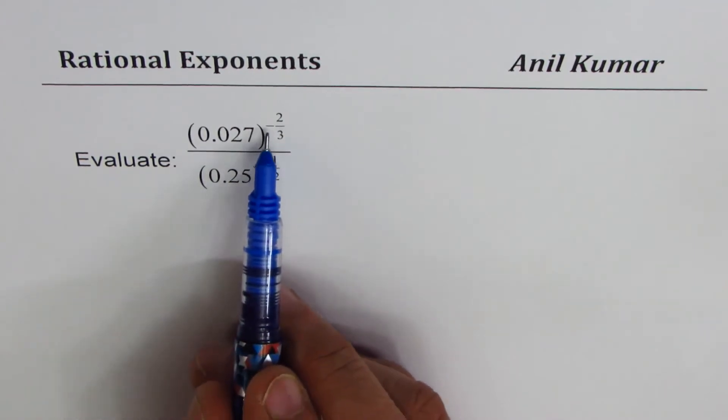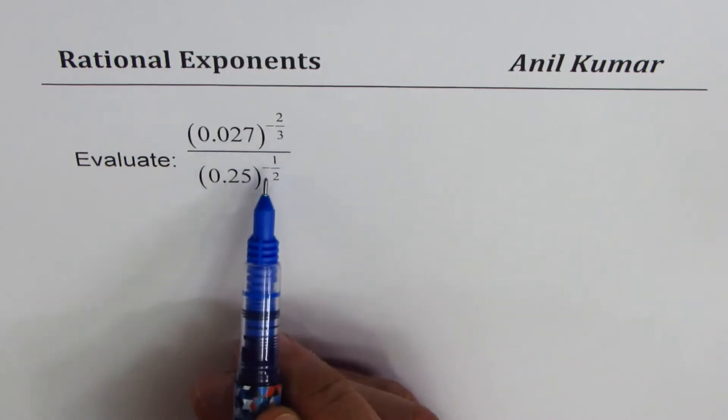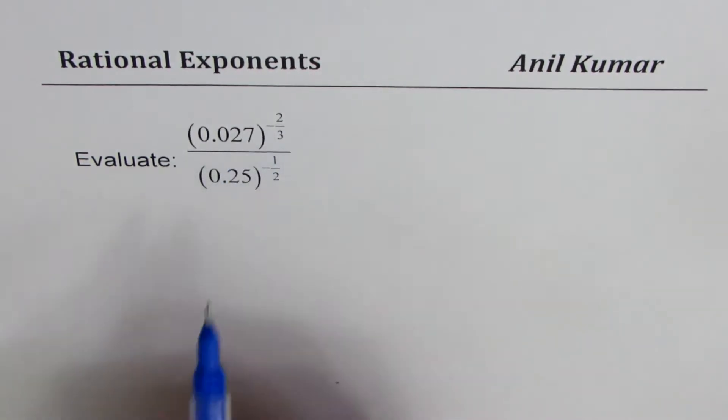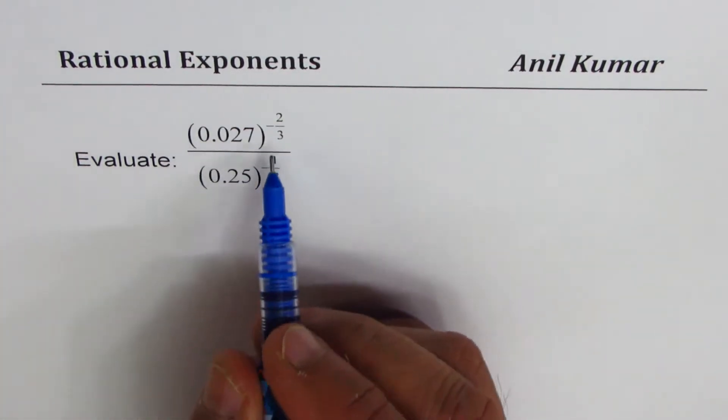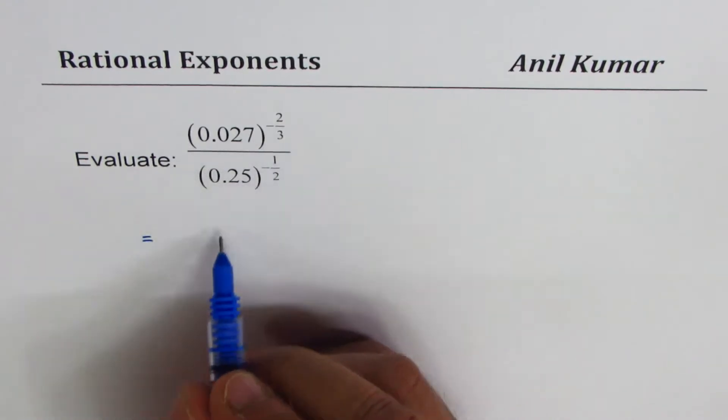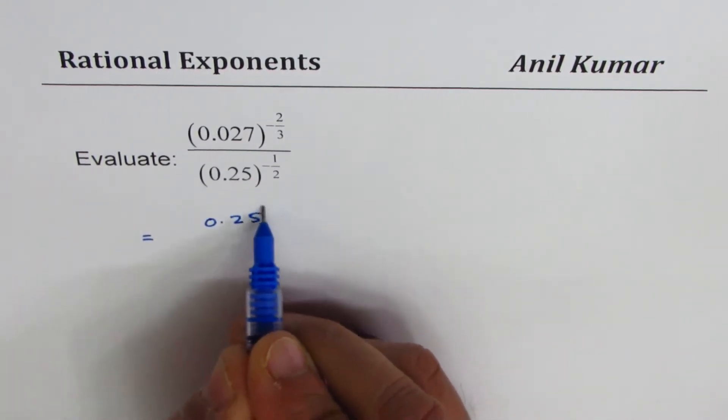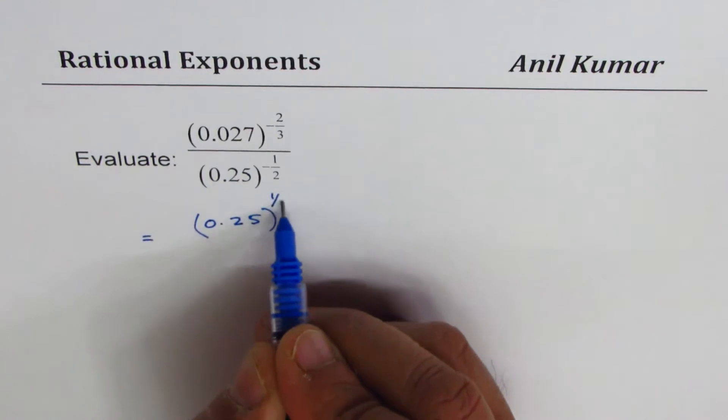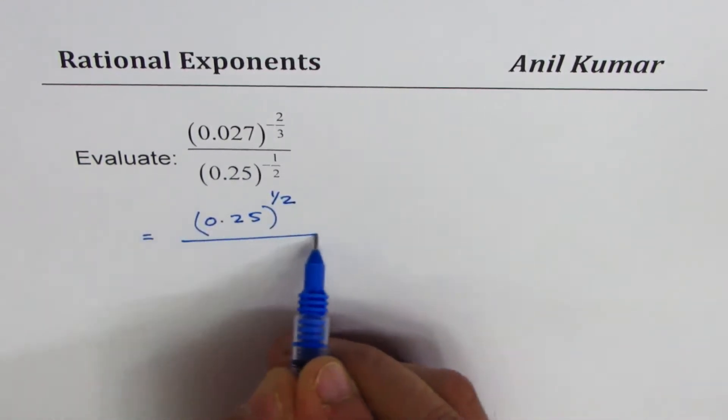Now first step could be, since both these are negative exponents, we could write them as reciprocals. So we could write this as equal to (0.25) to the power of half divided by...